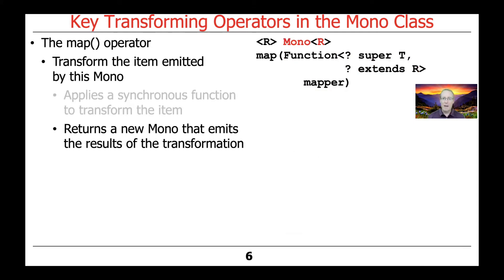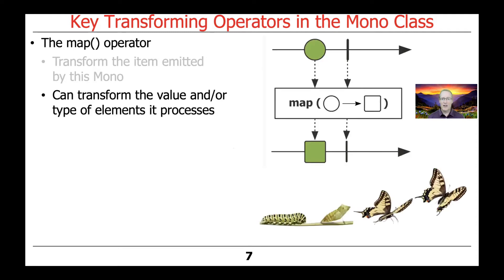The MAP method returns a new Mono that emits the results of the transformation. You can transform the item in a couple of different ways: you can transform its value — say doubling it or subtracting something from it — or you can also transform its type, for example going from an Integer into a different type like a String. Those are the different types of transformations that MAP can perform.